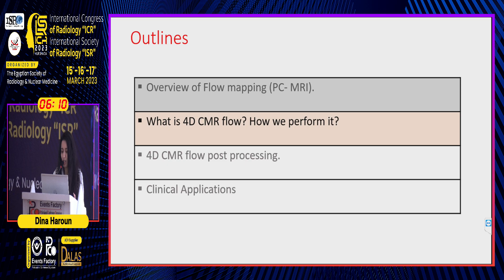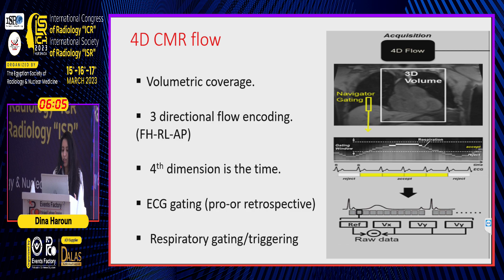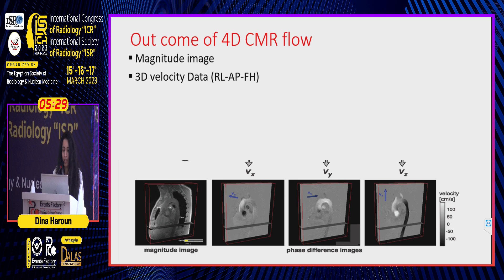Here arises the need for 4D flow. The method of acquisition involves volumetric coverage across the heart in a 3D volume, and it is respiratory gated. The fourth dimension is time. The raw data covers the x, y, and z directions, and across time — those are the four directions. It provides volume coverage from the heart, from head to feet, and is ECG gated.